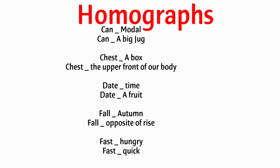More homograph examples: can — a modal verb; can — a big jug. Chest — a box; chest — the upper front of our body. Date — a time; date — a fruit. Fall — autumn; fall — to drop. Fast — to go without food; fast — quick.